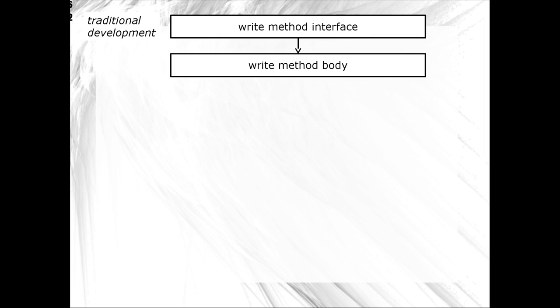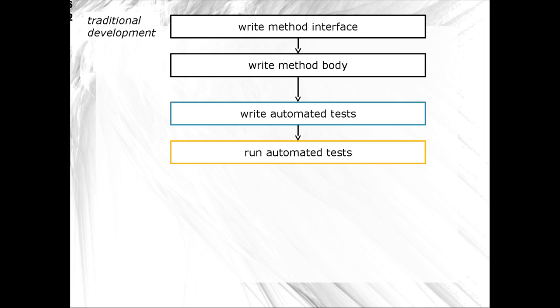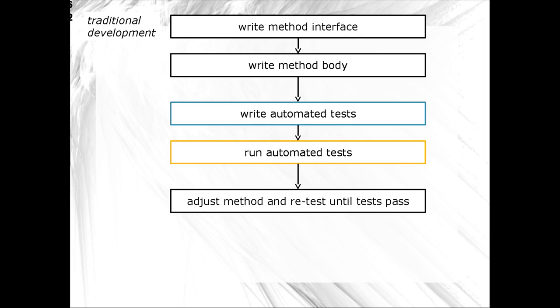In traditional development: first, you write a method interface, then you write the method body, then you write the automated test, you run the automated test, and you adjust the method and retest until the test passes. So you write it first, write the test, run it, and repeat — adjusting the method and retesting until your tests pass.